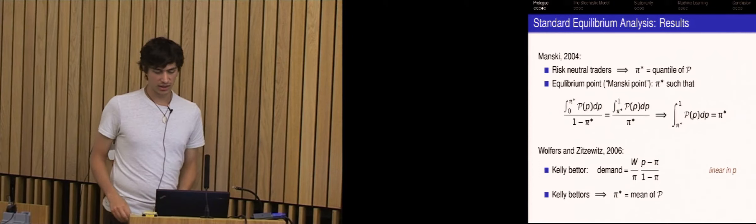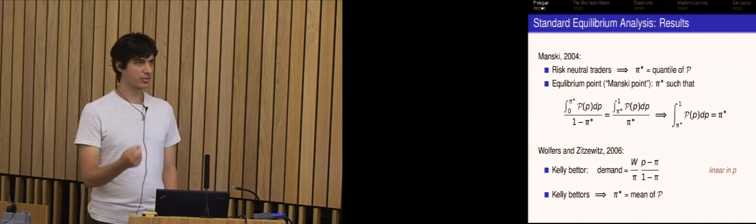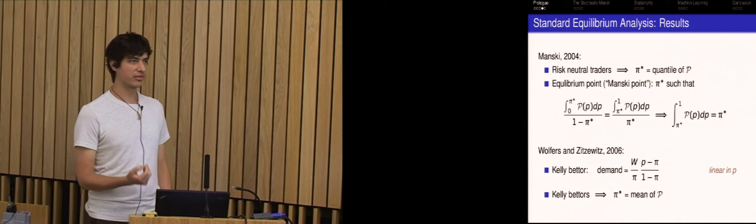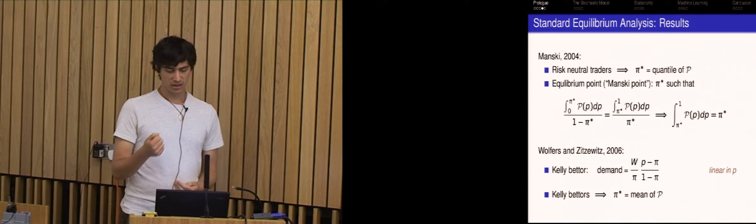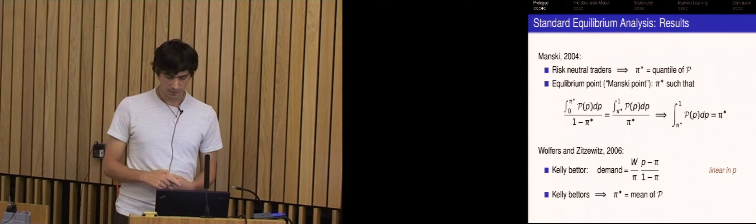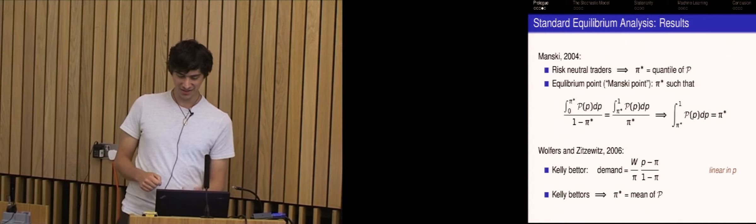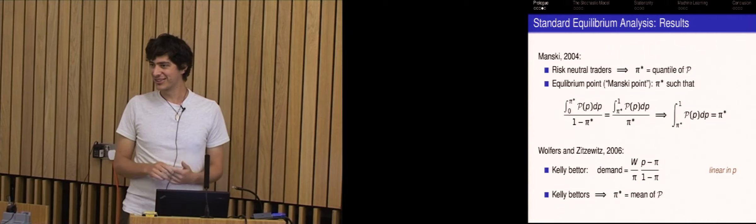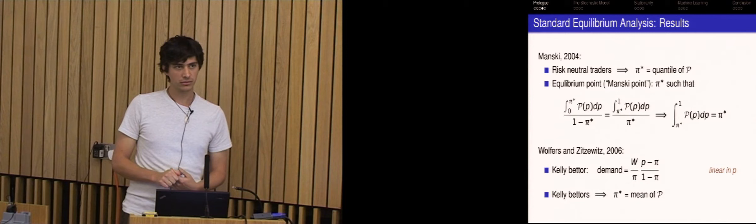So you get this peculiar quantile and Wolfers and Zitzowitz in 2006 followed this up and they weren't quite satisfied with this weird quantile. And they found that if you look at Kelly betters, which are essentially betters that have log utility, then their demands are actually a linear function in the belief. And so if you carry out the same analysis, because it's now linear in the belief, the equilibrium price is going to be the mean of this distribution P. Why is it linear in the belief?